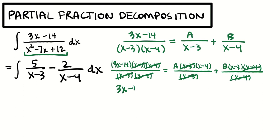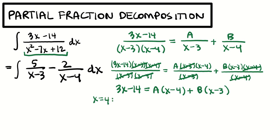That means 3x minus 14 is equal to A times (x minus 4) — where A is the number that goes over x minus 3 eventually — plus B times (x minus 3) — where B is the number that eventually goes over x minus 4. This equation is true for all x, so it'll be true for convenient values. We'll let x equal 4: 12 minus 14 is negative 2, equals A times 0 plus (4 minus 3) is 1 times b. So b equals negative 2.